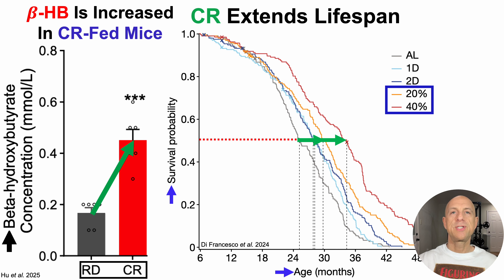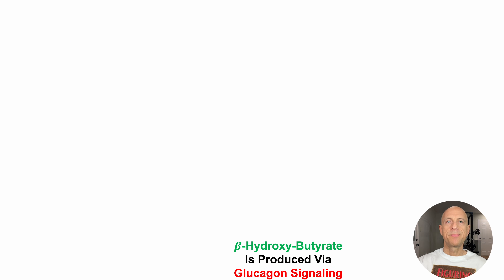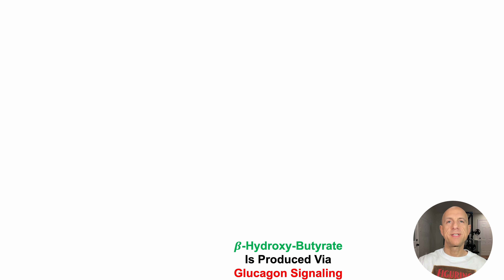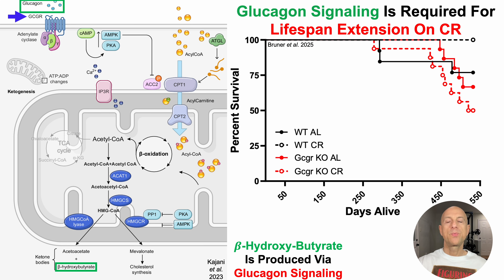But note that these are just associations — we've got data that a ketogenic diet and calorie-restricted diet extend lifespan in association with circulating levels of beta-hydroxybutyrate. Can we get closer to causation? Is beta-hydroxybutyrate related to CR's lifespan-extending effect? To get closer to answering that question, we need to see that beta-hydroxybutyrate is produced by glucagon signaling. Glucagon binds to its receptor, the GCGR or glucagon receptor, and when it does that, it triggers an intracellular signaling cascade that leads to the production of beta-hydroxybutyrate. This is particularly important because glucagon signaling is required for the lifespan-extending effect of calorie restriction.